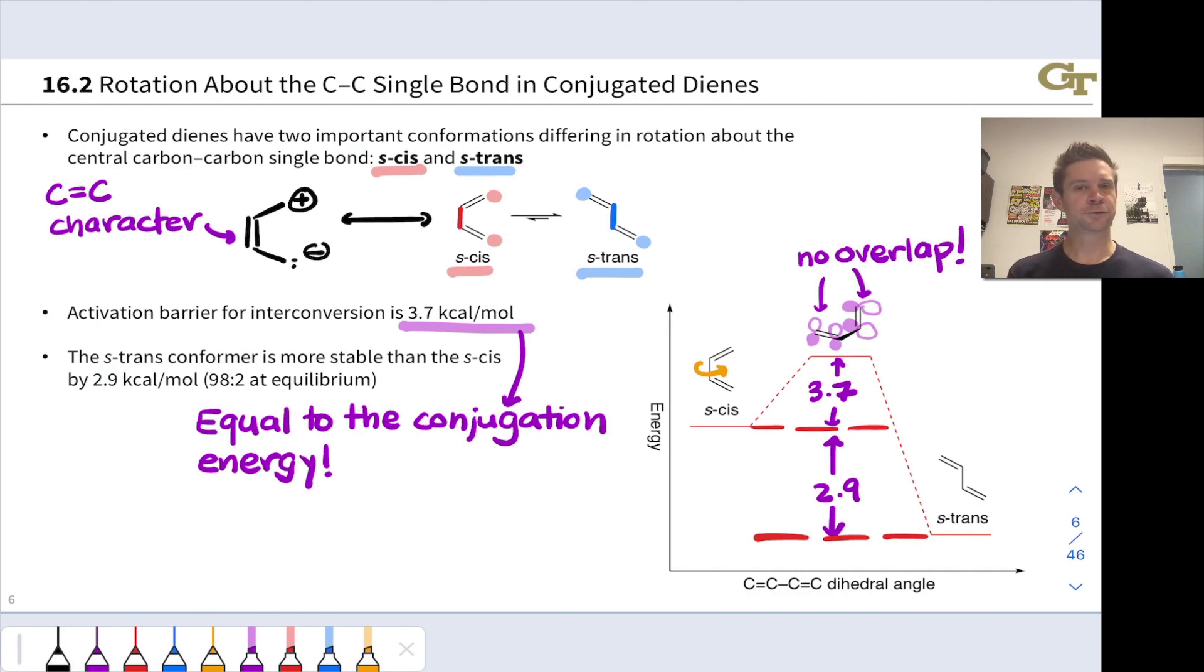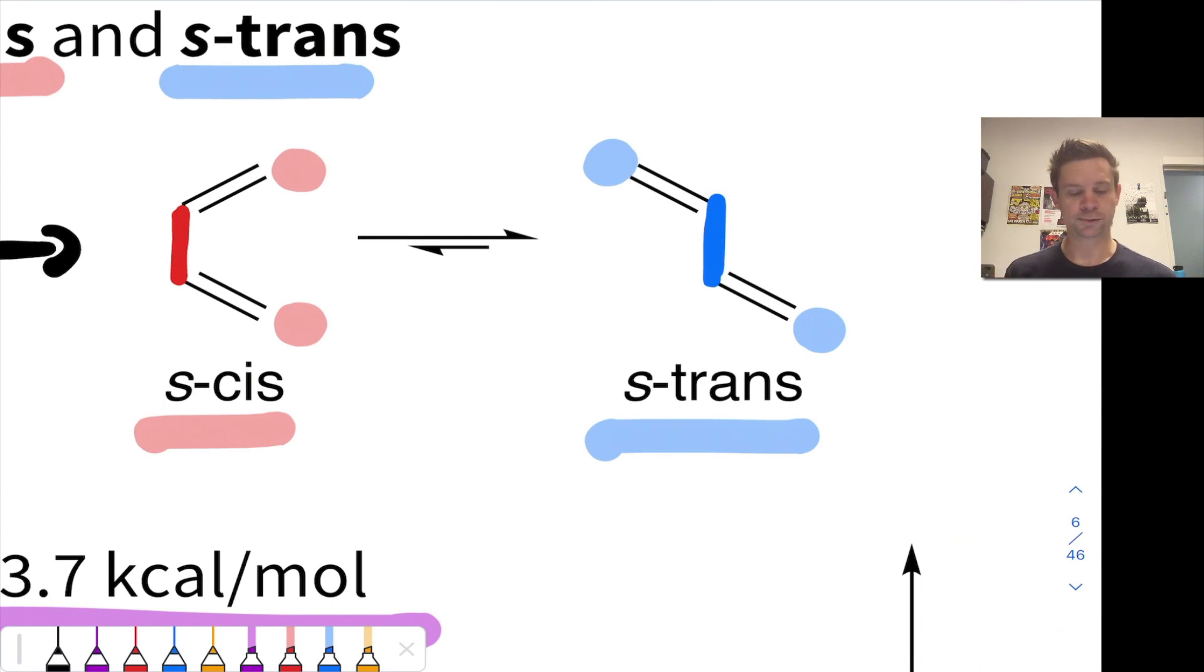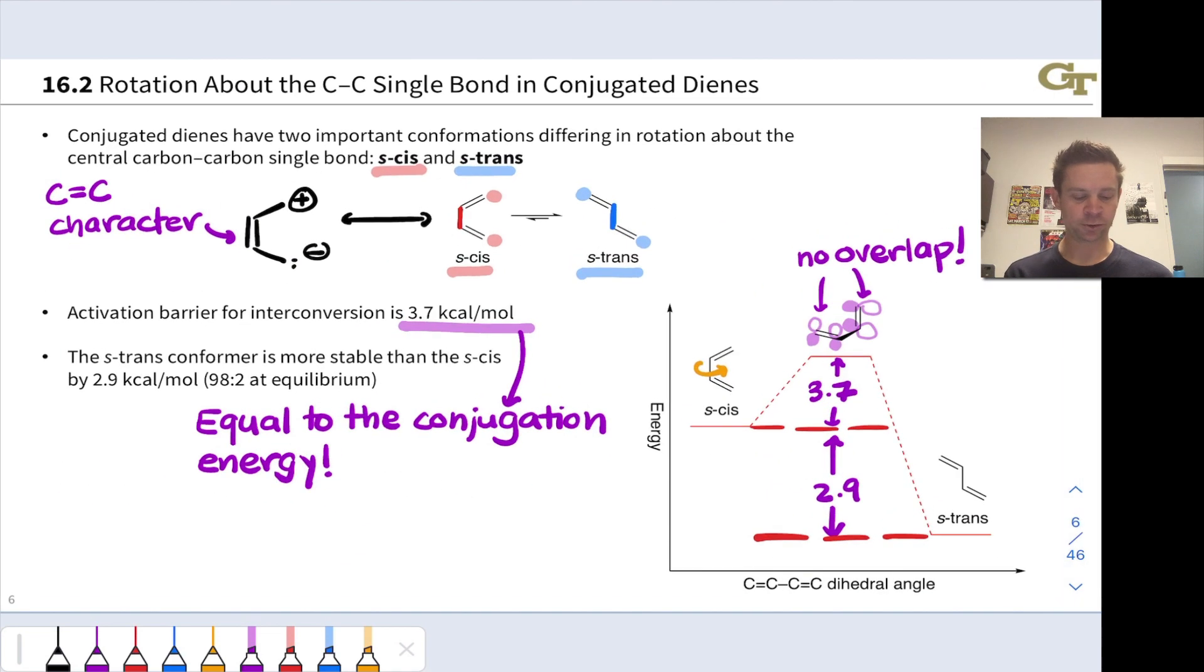We'll see these conformers again, is the last thing I'll say. Dienes react in several important reactions, one of which will feature in an upcoming lesson. In those reactions, the S-cis conformer is actually the reactive conformer, even though it's only present to the tune of 2% at equilibrium.